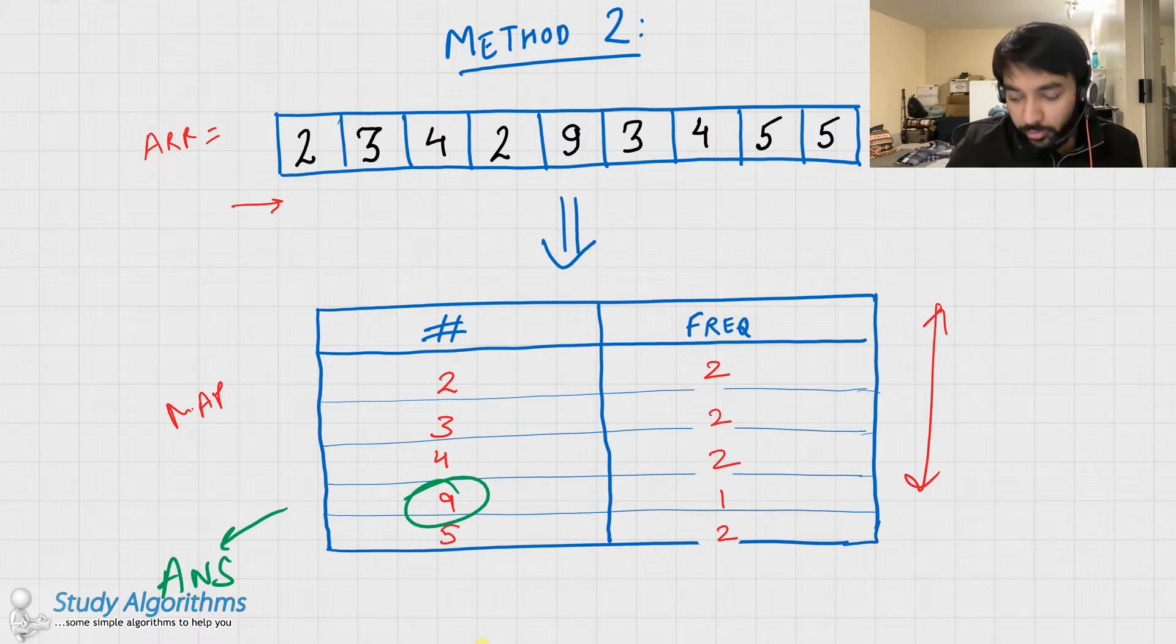This approach takes up order of n extra space, but as you can see, the time complexity is also order of n. So it's still better than the previous approach.